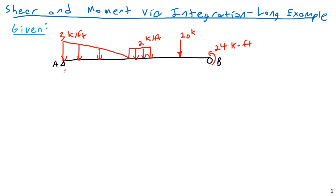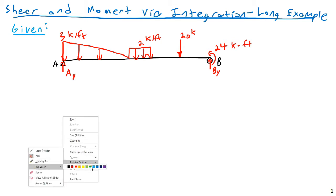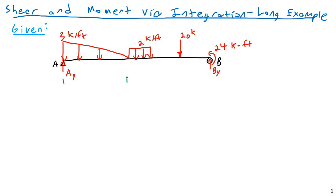In terms of reactions, I'll ignore the horizontal reaction AX since there are no horizontal loads, so it would be zero. We have a vertical reaction AY at A and a vertical reaction BY at B. I'll go ahead and label the dimensions: six feet, four feet, four feet, and four feet.